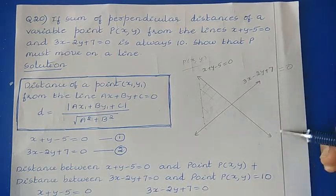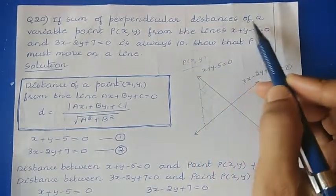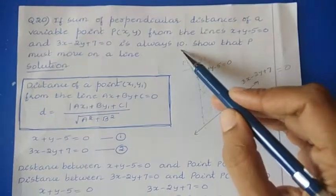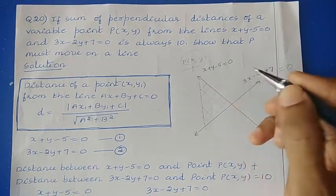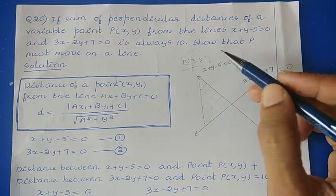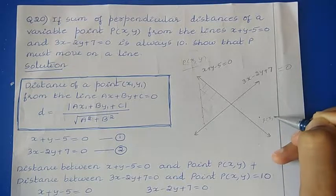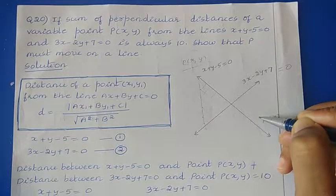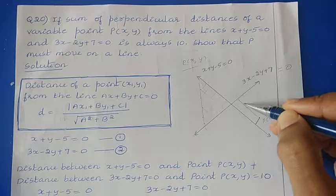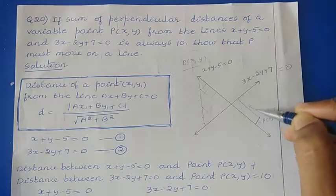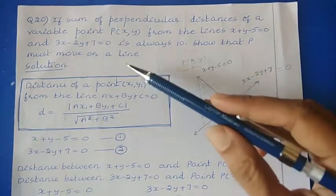I am drawing a rough diagram. They have mentioned about one point P(x,y). So the sum of perpendicular distances of variable point P from these two lines is given as 10. If we consider any point and find the perpendicular distances d1 and d2 from the two lines, then d1+d2=10. This is given to us.